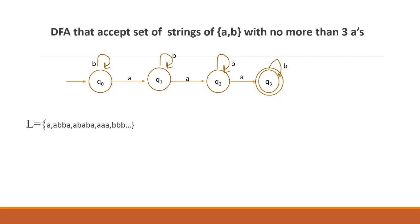Now, we will accept 0 a's, 1 a, 2 a's, and 3 a's - no more than 3 a's, which means maximum 3 a's. We are going to accept this. If we accept 1 a, then Q1 is an acceptance state. That means 1 a here - that's it.